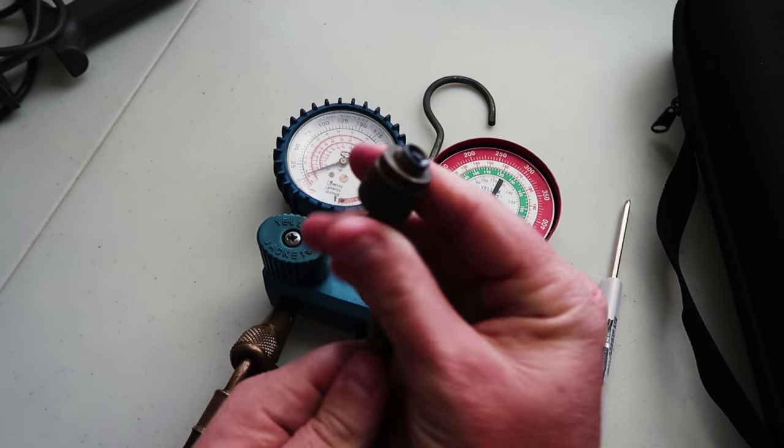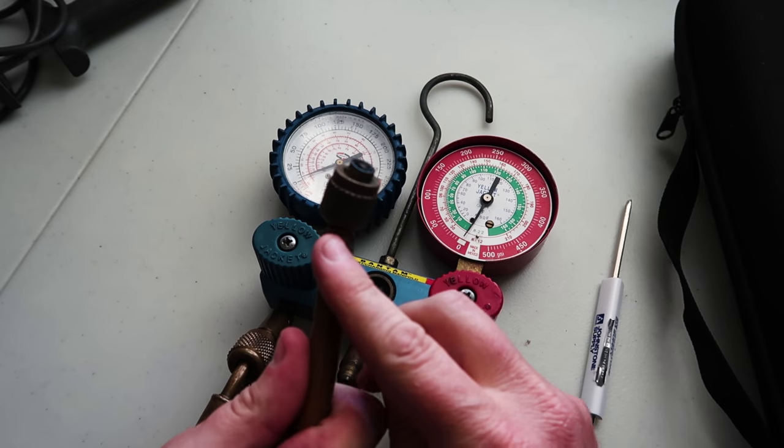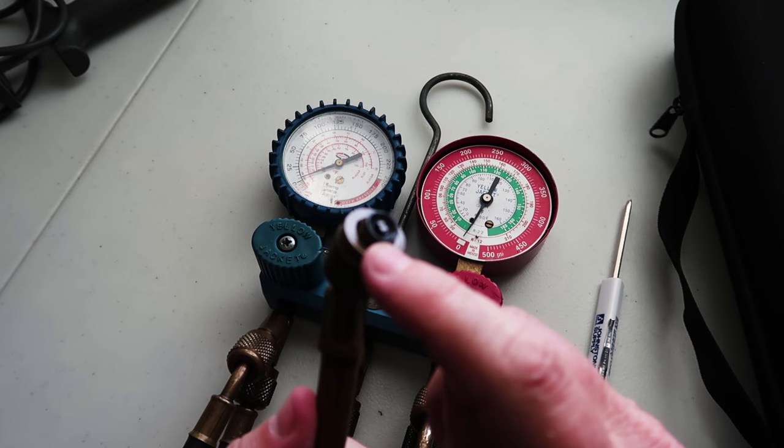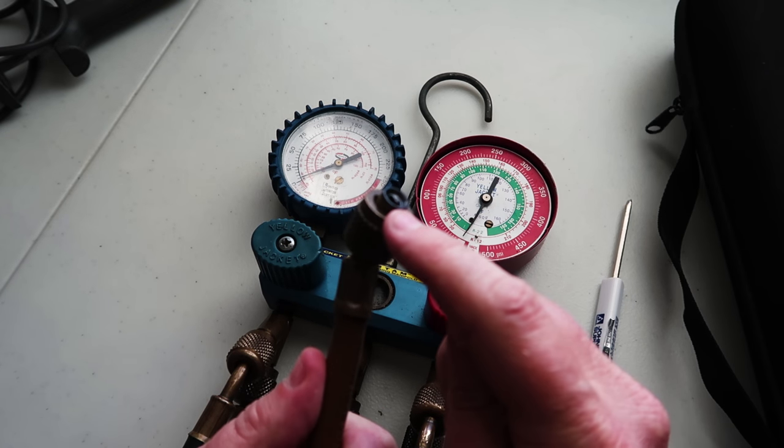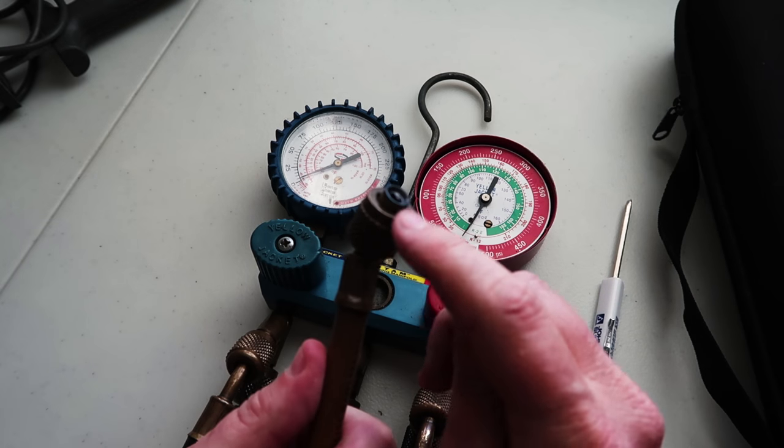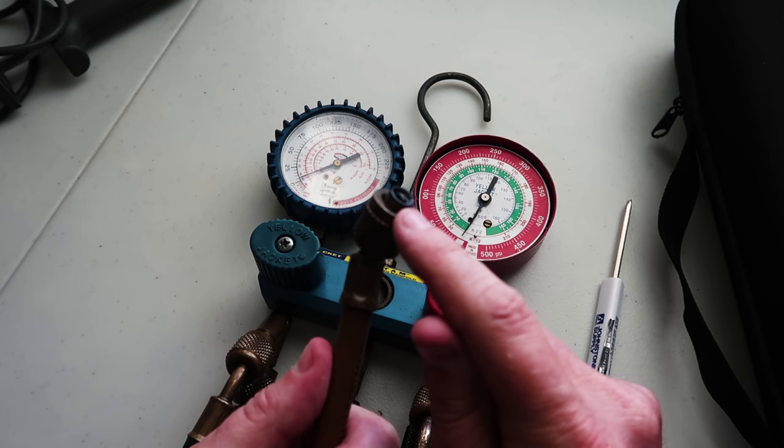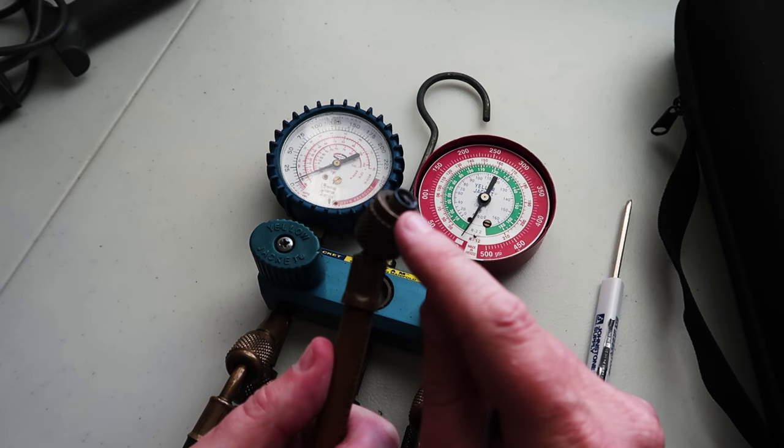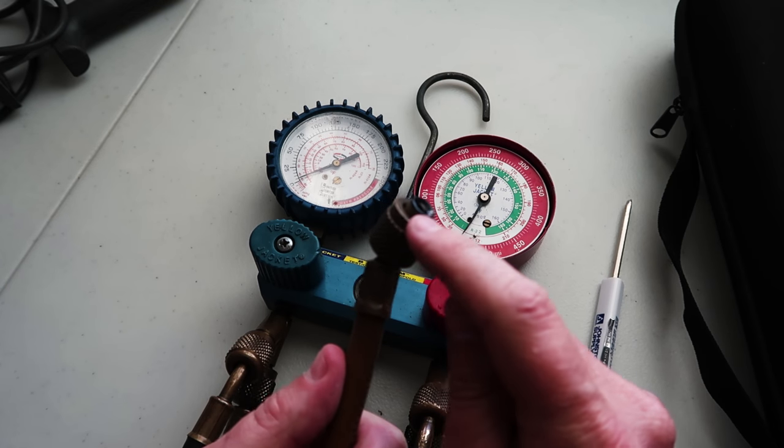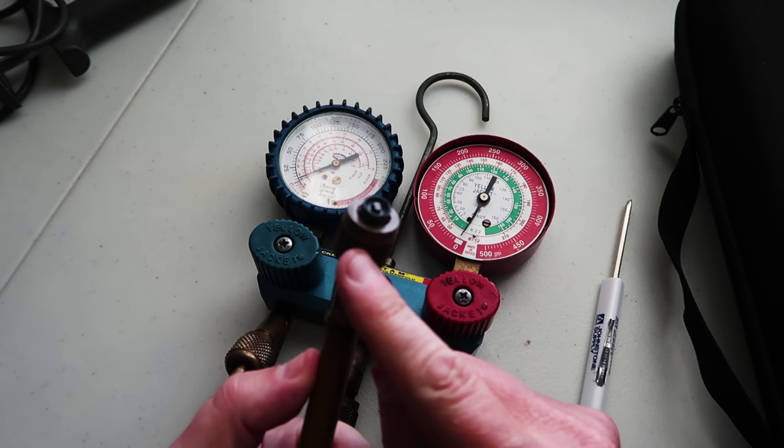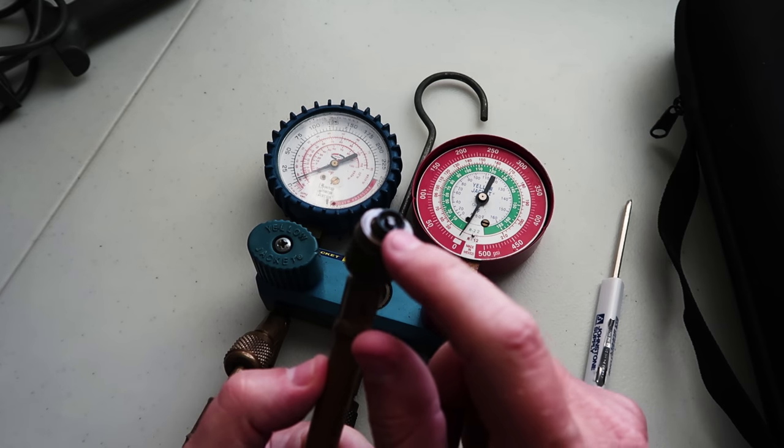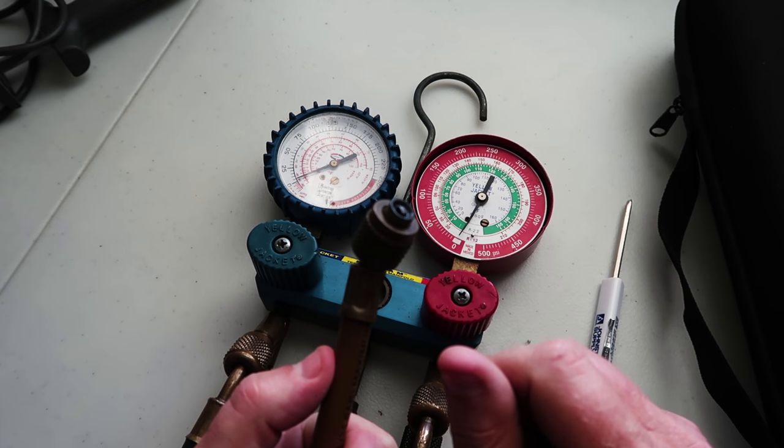The same thing is true when you attach these onto the system. You don't want to over tighten them because you'll over compress the seals inside here, and you'll notice that you have to replace your seals more often. Be very thoughtful about the seals in your equipment. Also don't overheat these. So if you're brazing on a system, you want to make sure to keep the valves cool so you don't overheat the rubber seals inside. Otherwise, you're going to find that you go through a lot of these seals. And on most gauges, these are replaceable.